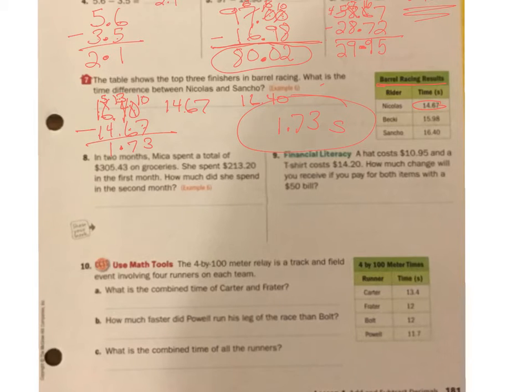Number 8. In two months, Micah spent a total of $305.43 on groceries. She spent $213.20 in the first month. How much did she spend in the second month? So I know my total. This is first month. If I take away the first month, it'll leave me with the second month. So 305.43 minus, line up all my place values, line up my decimal. Now I subtract. 3 minus 0 is 3. 4 minus 2 is 2. My decimals drop down. 5 minus 3 is 2. 0 take away 1, 10 cannot do. So I borrow. 10 minus 1 is 9. 2 minus 2 is 0. So in the second month, she spent $92.23.